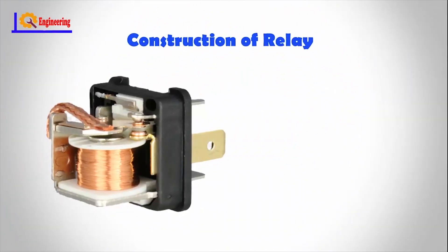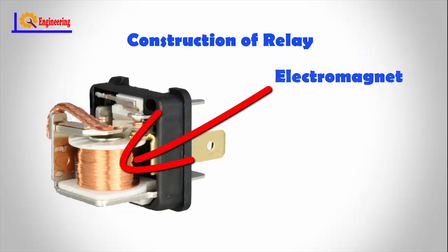Construction of Relay: There are five parts in every relay. Number 1: Electromagnet. It consists of an iron core wound by a coil of wires. When electricity is passed through, it becomes magnetic, therefore it is called an electromagnet.